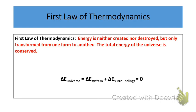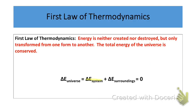We have an equation that relates to the first law of thermodynamics. In this equation, we have a triangle — the triangle just means 'change.' So any time you see a triangle, we're just talking about a change in something. In this case, we're looking at delta E, which is the change in energy of the system plus the change in energy of the surroundings. The change in energy of the system plus the change in energy of the surroundings equals the change in energy of the universe, and that sum equals zero — meaning energy is conserved during chemical and physical processes.